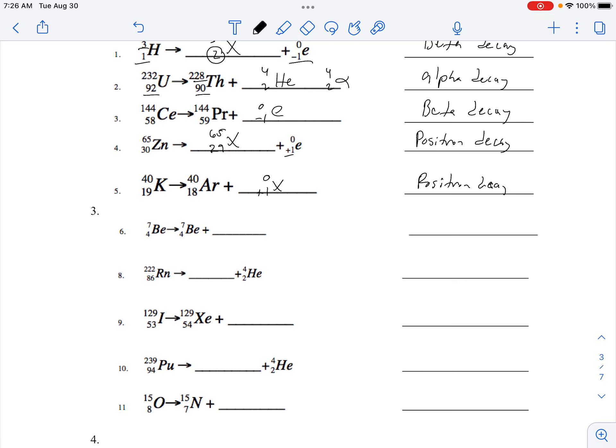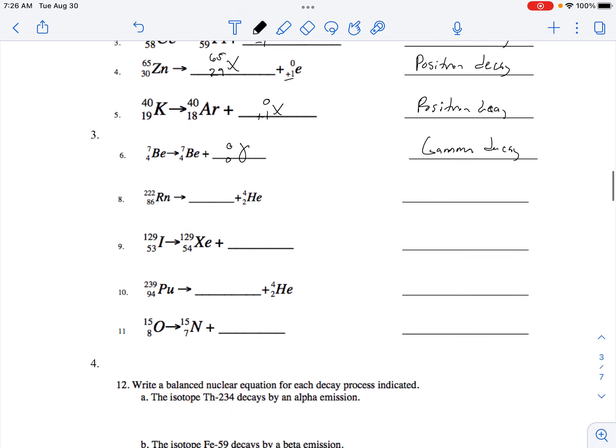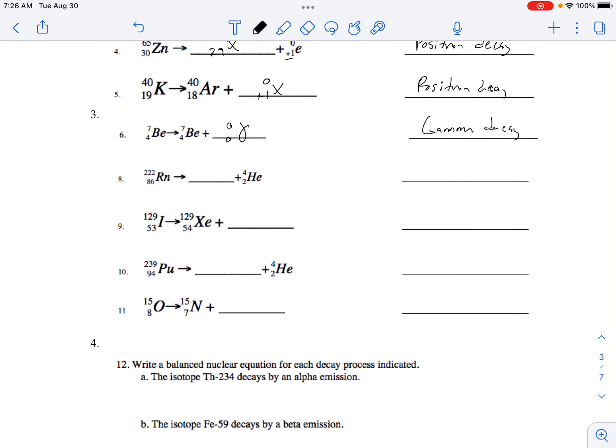Next thing: zero and plus one again, positron. This one is zero, zero - no change. Gamma decay. It's rather a photon of light that is emitted.